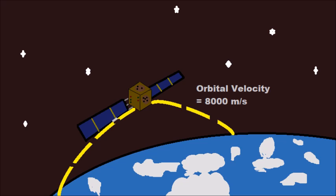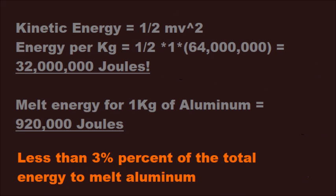This means that the satellite has a lot of kinetic energy. In fact, each kilogram of the satellite contains 32 million joules of kinetic energy.